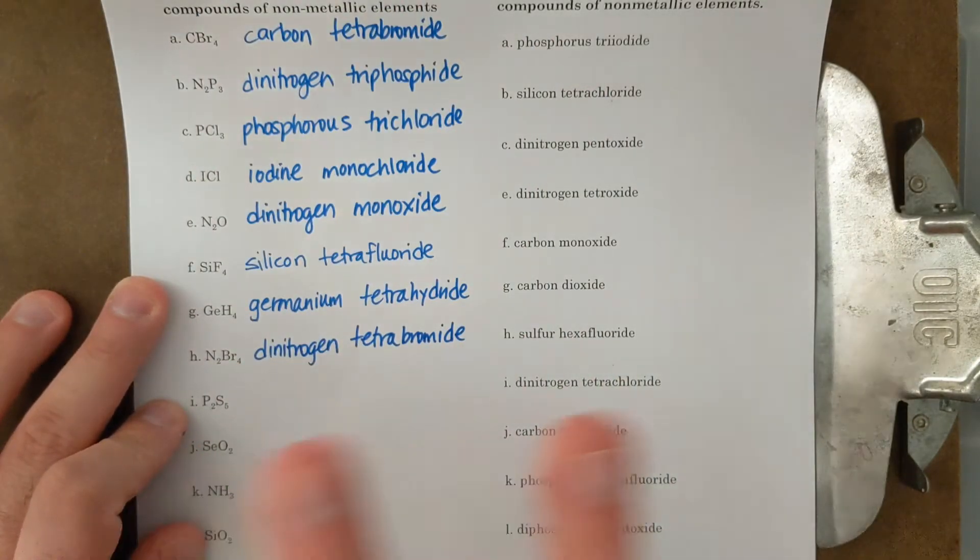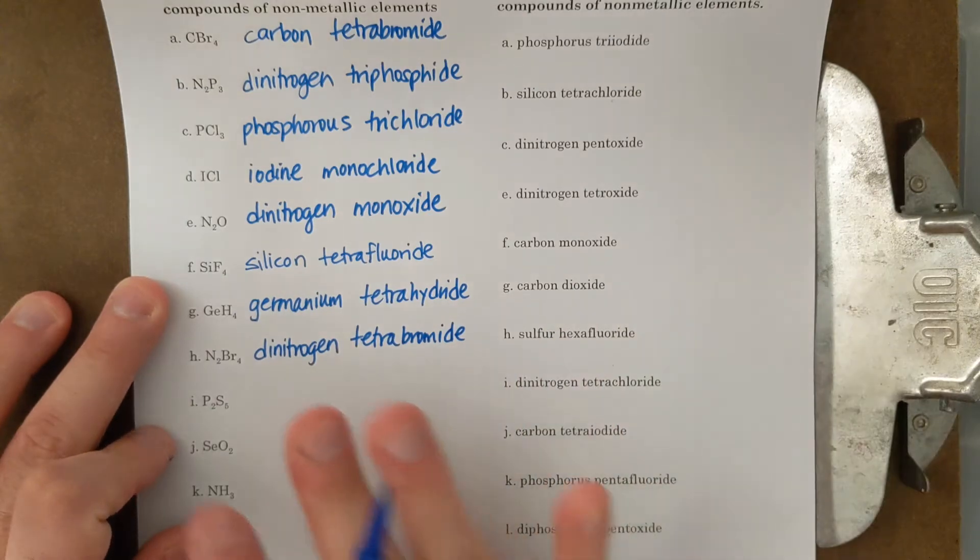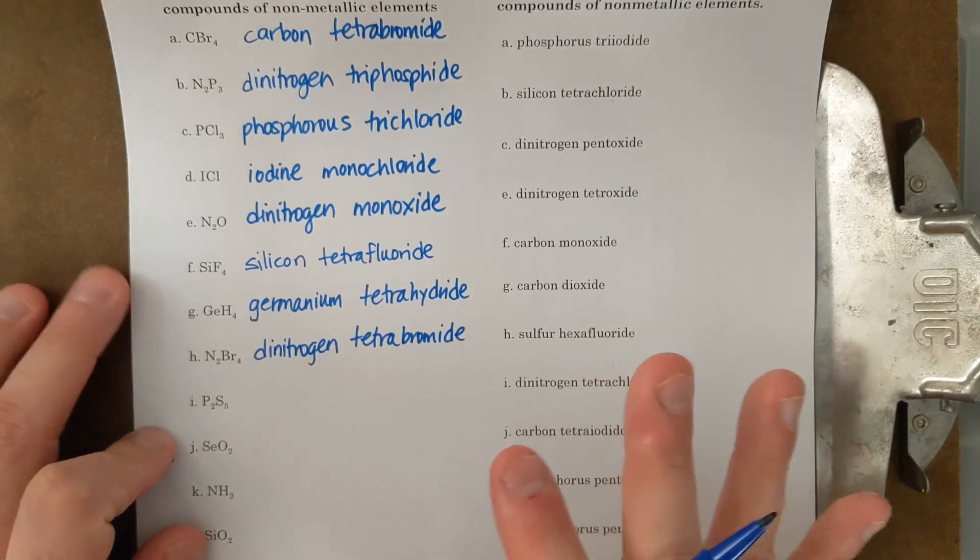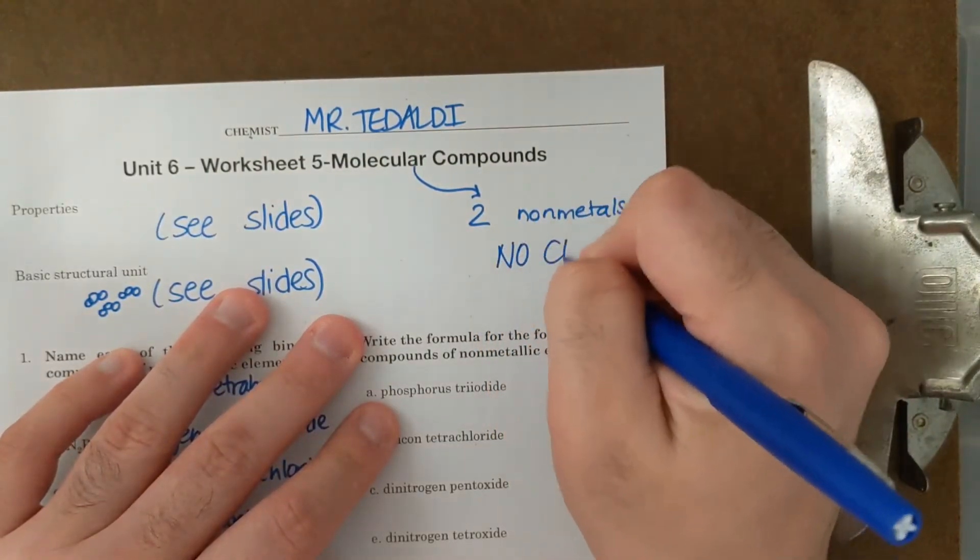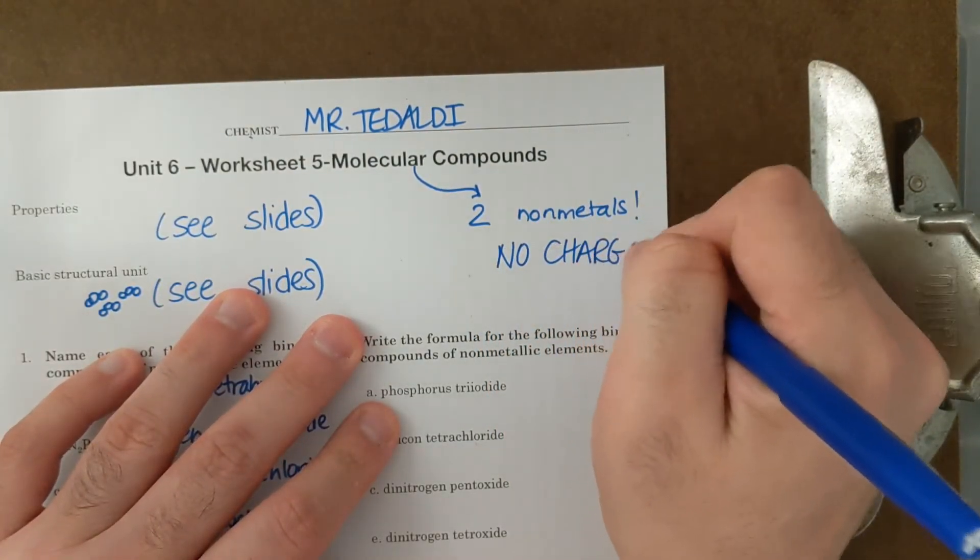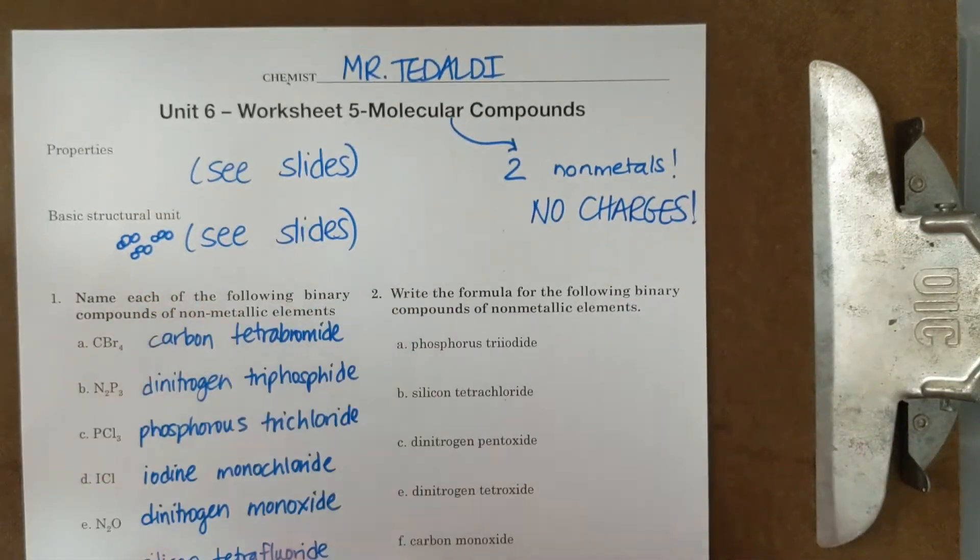And notice how I'm not looking for ions. There's no roman numerals. There's no polyatomic ion names. I'm not doing anything with charge. These two nonmetals have no charges. So I'm not trying to balance a charge. I'm not looking at the charges on the periodic table. I'm just using what I got in front of me.